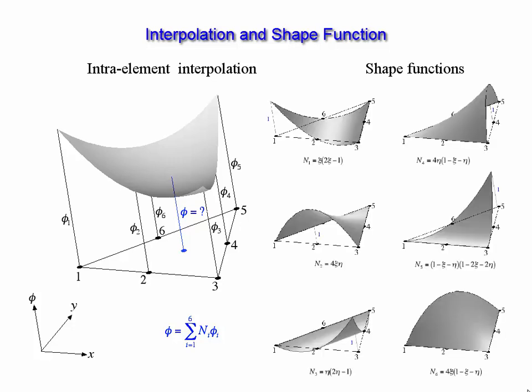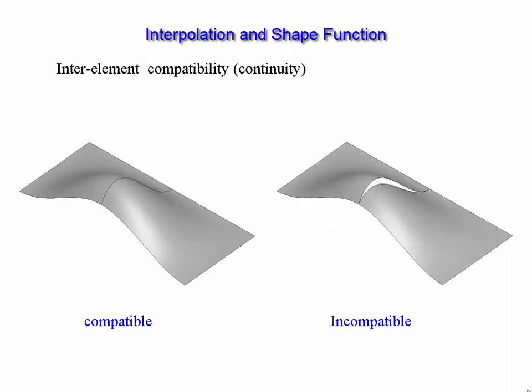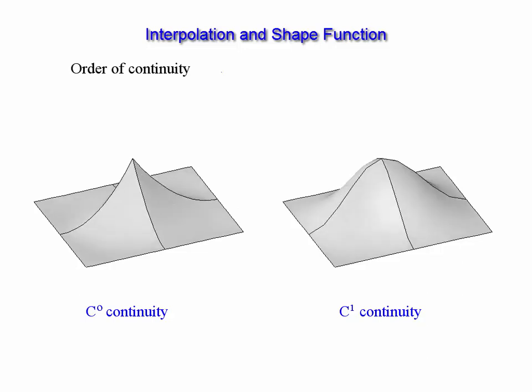The characteristics of element modeling can be examined through the graphical representation. They include the inter-element continuity related to compatibility of the shape functions between adjacent elements. Users can easily explore and understand the order of inter-element continuities, such as C0 and C1 continuities, using the interactive graphical manipulation.